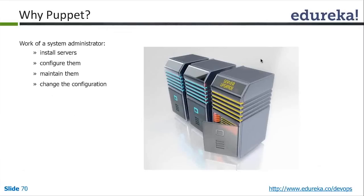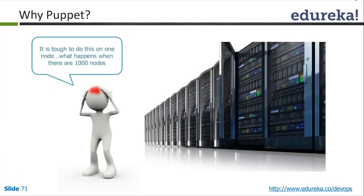That is also some kind of configuration, but Puppet is much more than that — it is not an ITIL tool. Why Puppet? It is tough to manage configuration on one node; what happens when there are thousands of nodes? Today, when we talk about thousands of nodes, it doesn't mean thousands of physical servers — you may have 100 or 200 servers but hundreds of thousands of VMs. A node need not be a physical instance; it can also be a virtual instance.